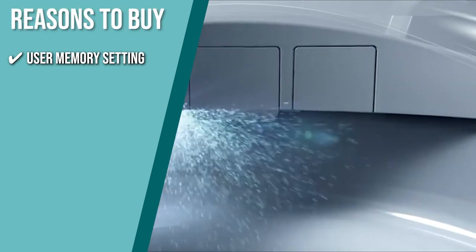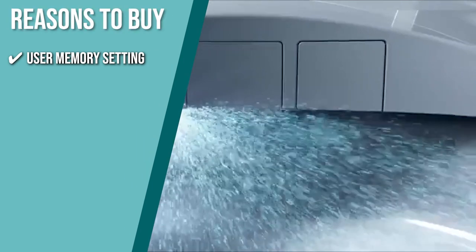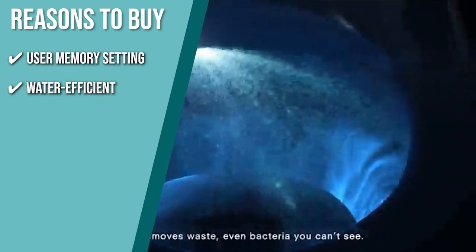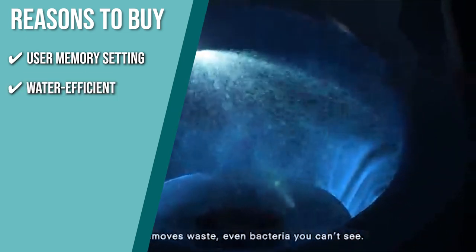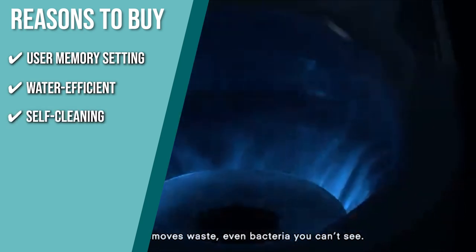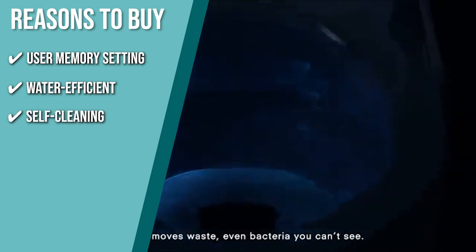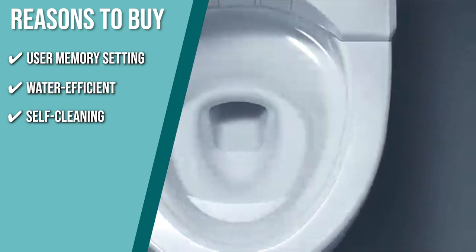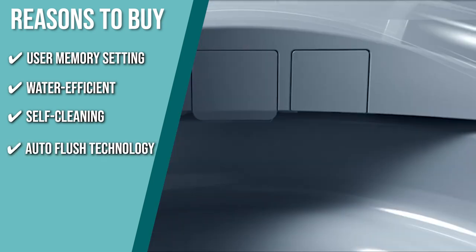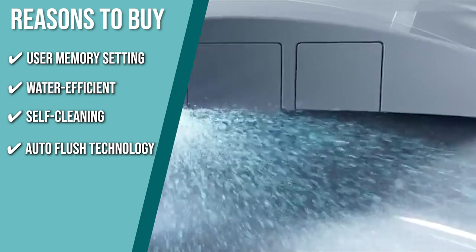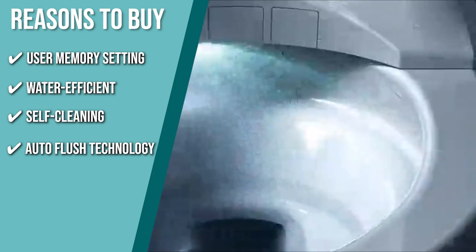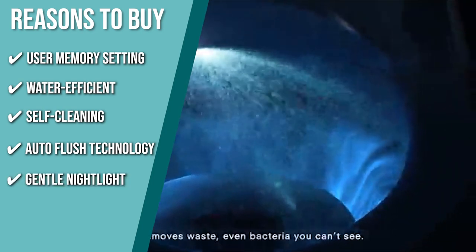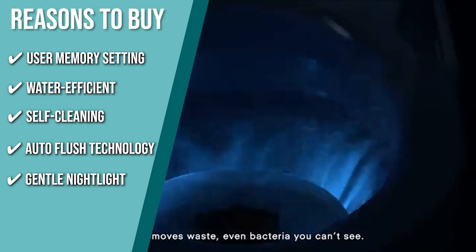User Memory Setting: You may select one of the two user memory settings to instantly dial in your preferences. Water Efficient: A single flush uses only one gallon of water, so it's great for the environment. Self Cleaning: The E-Water Plus feature automatically sprays electrolyzed water to help keep your bowl fresh and reduces the need for harsh chemical cleanings. Auto Flush Technology: The smart toilet boasts a hands-free automatic flush system that provides convenience and promotes a more hygienic environment. Gentle Night Light: Its built-in lights help make navigation easier for those late-night trips to the bathroom.